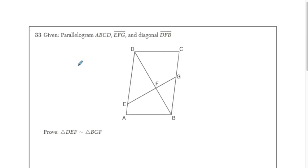Now, the second one says, given parallelogram ABCD, EFG, and diagonal DFB, prove that triangle DEF is similar to triangle BGF. Now, this is a level three question, and this is actually similarity. It's also kind of coupled with parallelogram properties, all right? But let's just go over, once again, the three ways to prove similarity.